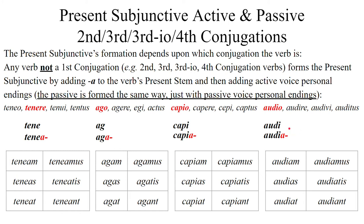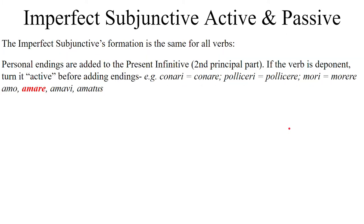And that's it for the present subjunctive, active and passive, for all conjugations. The imperfect subjunctive, active and passive, is the same for every conjugation. So for every verb the formation will be the same: personal endings will be added to the present infinitive, that is the second principal part of the verb. On a side note, if the verb is deponent, you should turn it active before adding the personal endings.